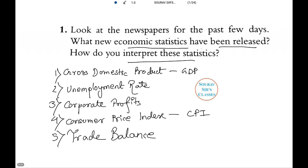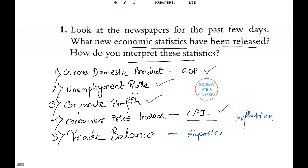A large number of economic statistics are released regularly. These include: 1. GDP — the market value of all final goods and services produced in a year. 2. The unemployment rate — the percentage of the civilian labor force who do not have a job. 3. Corporate profits — the accounting profits remaining after taxes of all manufacturing corporations, giving an indication of the general financial health of the corporate sector. 4. CPI or consumer price index — a measure of the average price that consumers pay for the goods they buy; changes in the CPI are a measure of inflation. 5. Trade balance — the difference between the value of goods exported abroad and the value of goods imported from abroad.